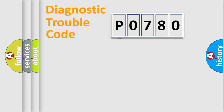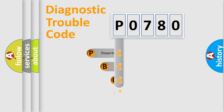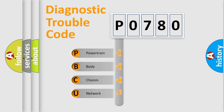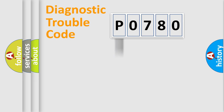First, let's look at the history of diagnostic fault code composition according to the OBD2 protocol, which is unified for all automakers since 2000. We divide the electric system of the automobile into four basic units: Powertrain, Body, Chassis, and Network. This distribution is defined in the first character of the code.